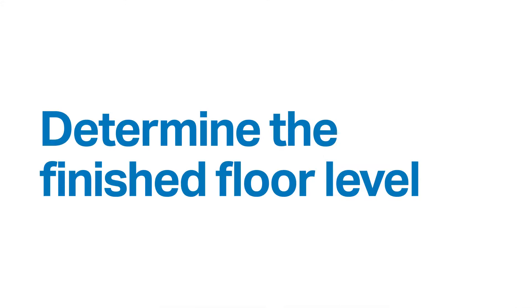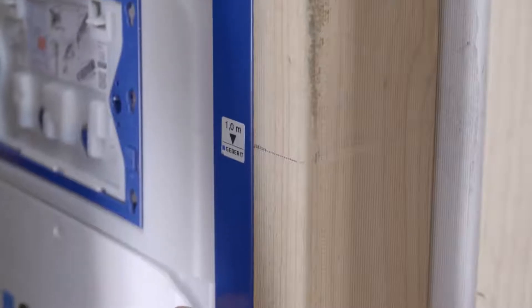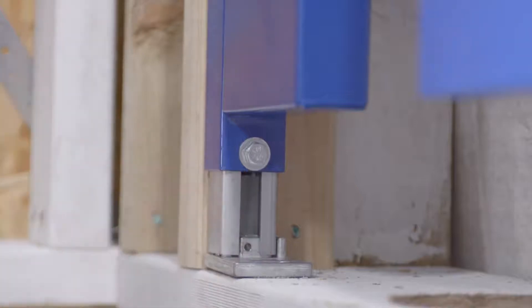First, check with the builder to determine the finished floor level. Measure one metre up the stud and align the Geberit metre mark on the frame. Adjust the height of the legs and tighten.